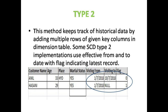Here the example uses the same customer table with columns: customer name, age, place, marital status, visiting from date, visiting to date, and a flag. Some tables have visiting from and visiting to dates, and some tables have a flag. Here I have mentioned both in one table. The data shows Anil, age 33, place Hyderabad, marital status yes, visiting from 1/7/2008 to 10/7/2018.